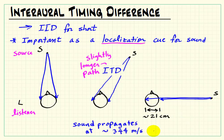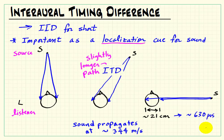For a typical adult, the distance between ears is about 21 centimeters. When we realize that sound propagates at roughly 344 meters per second, the distance in time between your two ears works out to 630 microseconds.